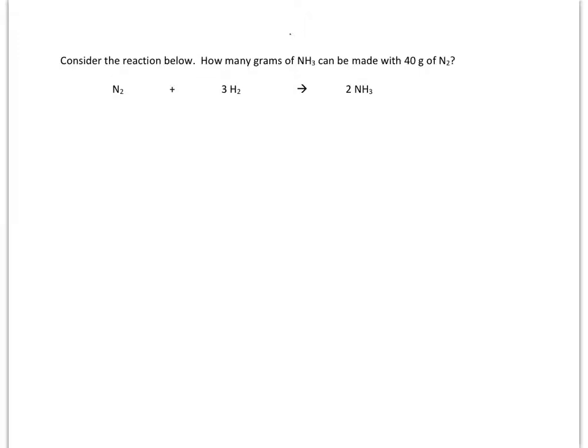In this problem, we are told that we have 40 grams of N₂, and we're trying to find the grams of NH₃ that can be made with that. The way mapping works is you always write the number that goes with that chemical under that chemical, which makes sense. So 40 grams of N₂, I'm going to write 40 grams of N₂.